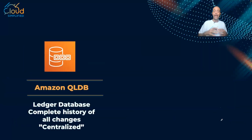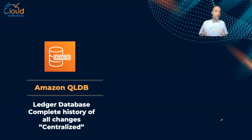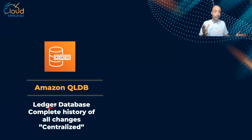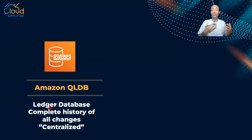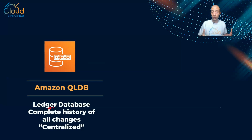Another offering is Amazon QLDB, which stands for Quantum Ledger Database. In exam questions, if you see anything related to ledger databases, think of QLDB. It is a ledger database that offers a complete history of all changes — for example, credit card transactions — and this is done in a centralized way.